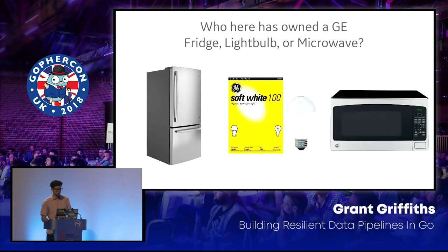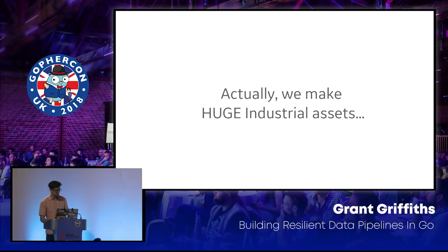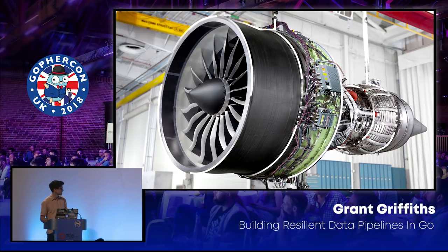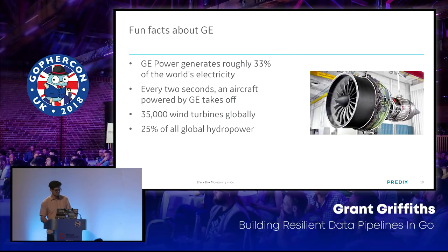So who here has owned a GE fridge, light bulb, or microwave? Most people know GE as building those kinds of consumer things. But actually, we build huge industrial assets — things like jet engines, wind turbines, and trains. Each of these generates petabytes of data. After a plane lands, there's about a couple of terabytes of data per landing — quite a bit.